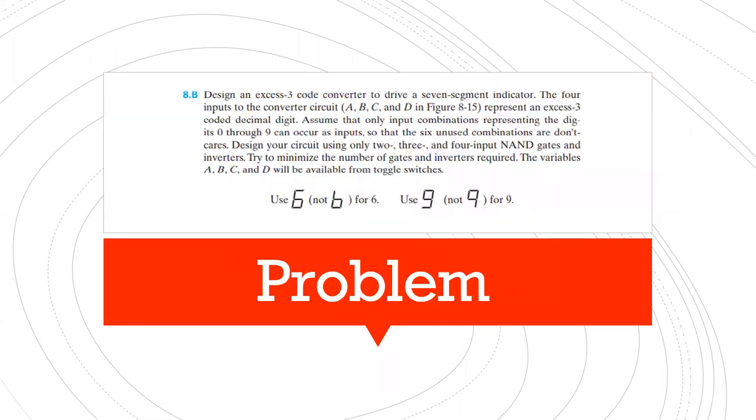And our problem is 8.B. So what it says is, design an XS3 code converter to drive a seven segment indicator. The four inputs to the converter circuit, A, B, C, and D, represent an XS3 coded decimal digit. Assume that only input combinations representing the digits 0 through 9 can occur as inputs, so that the six unused combinations are don't cares.